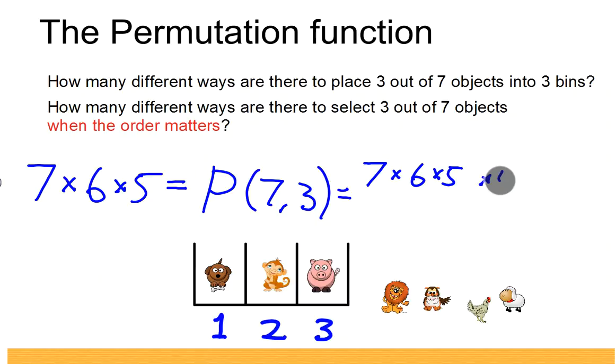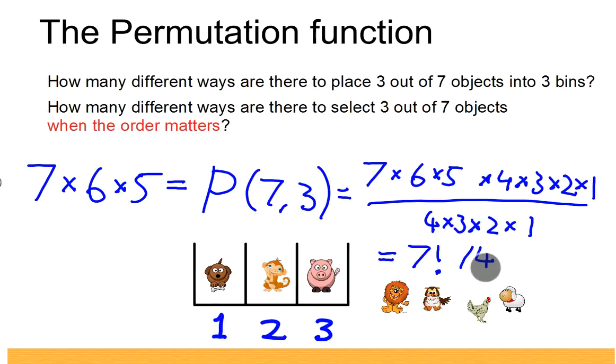And divide by the same thing: 4 times 3 times 2 times 1. So we can basically say that this and this cancel each other out. So what are these equal to? This is simply equal to 7 factorial divided by 4 factorial.